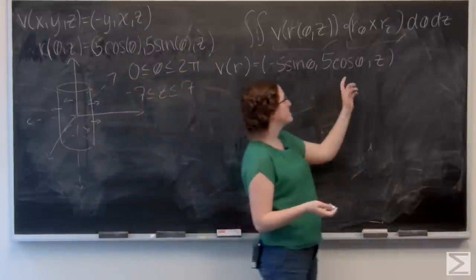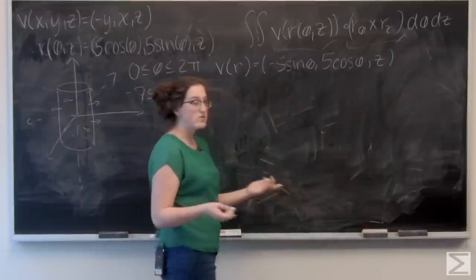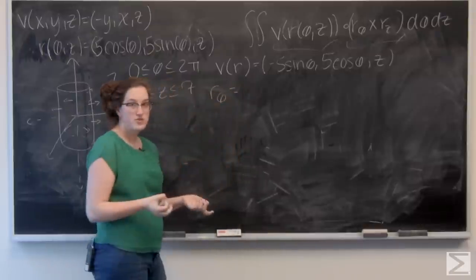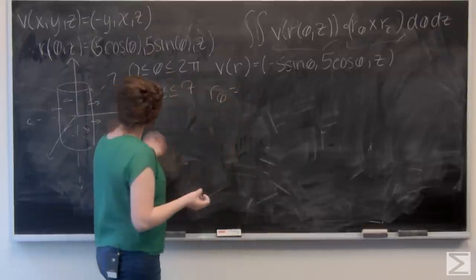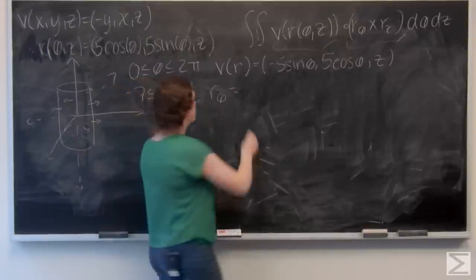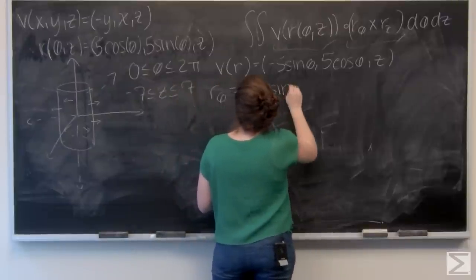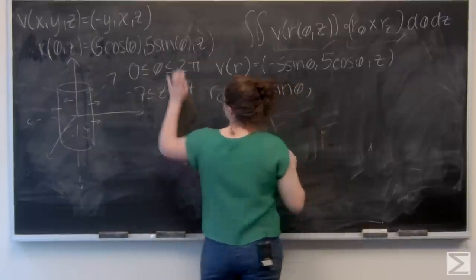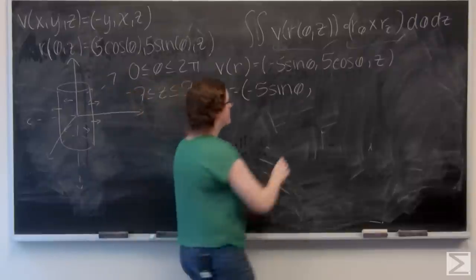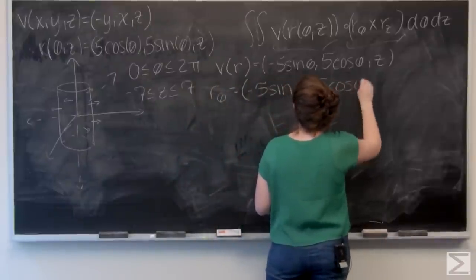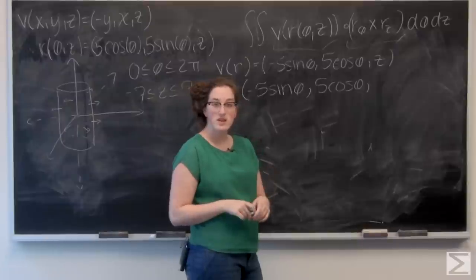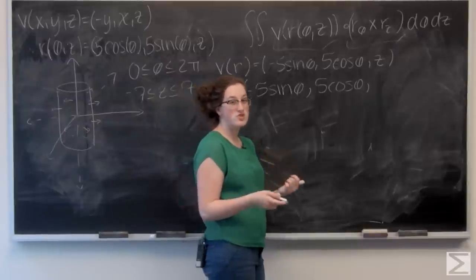Now I need to find r theta and r z and then their cross product. So let's start with r theta. So just differentiate each term in r with respect to theta. So first I've got 5 cosine theta, and the derivative of that is going to be negative 5 sine theta. And then for 5 sine theta, the derivative of that with respect to theta is going to be 5 cosine theta. And then z is treated like a constant when I'm differentiating with respect to theta. So its partial derivative is going to be 0.